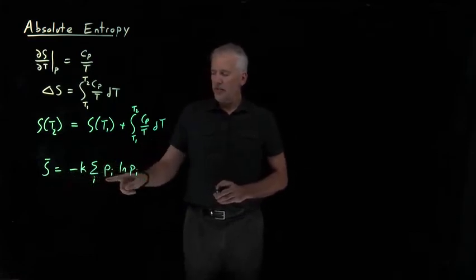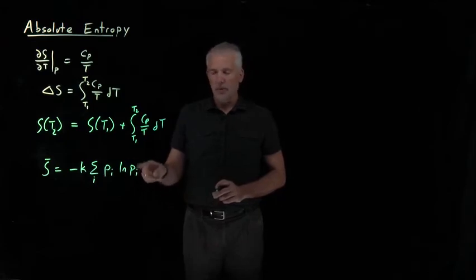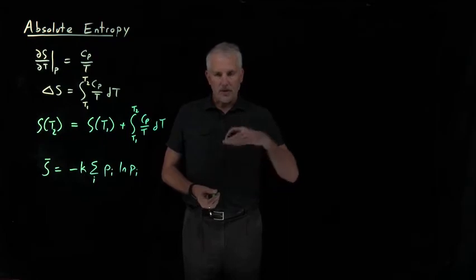The entropy is the sum of these P log P's, the sum of probability times the log of probability, where these are the Boltzmann probability of being in a particular state, the ground state, the first excited state, and so on.